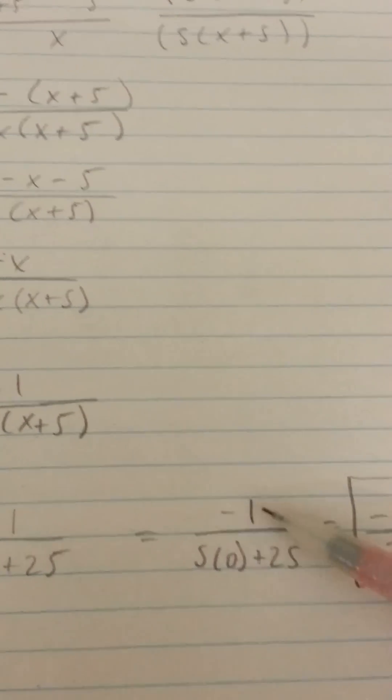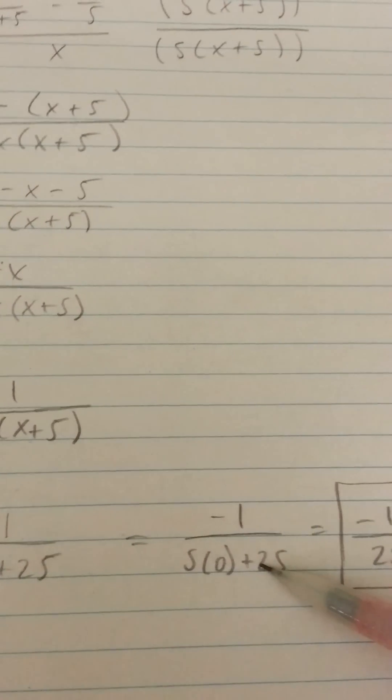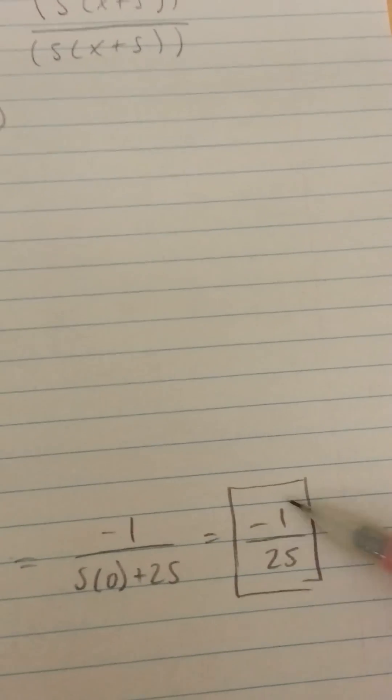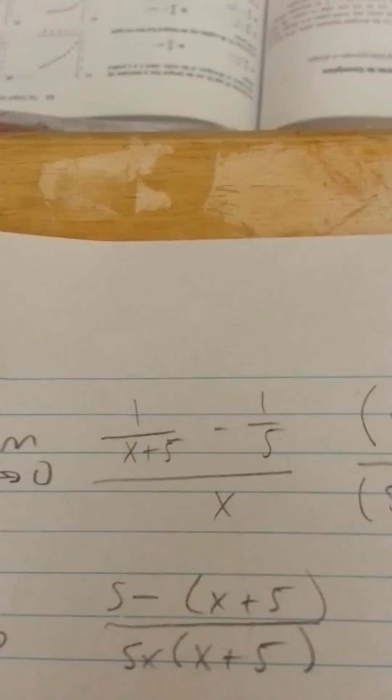Plug in that 0 for the x. You get negative 1 over 5 times 0 which is 0 plus 25, so we get negative 1 over 25 and that's the limit as x approaches 0 of this problem.